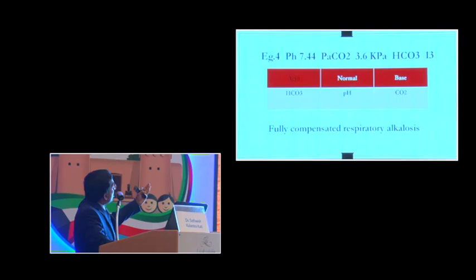Another example is pH of 7.44, PaCO2 of 3.6, and bicarbonate of 13. Now using your tic-tac-toe method, you find that the pH is in the normal column, your PaCO2 is in the base column, and your bicarbonate is in the acidic column. So this is a fully compensated respiratory alkalosis.